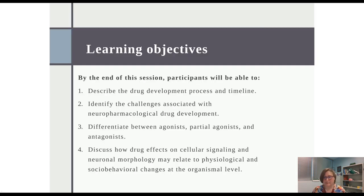At the end of this talk today, I hope that you will be able to describe the drug development process and timeline, identify challenges associated with neuropharmacological drug development, differentiate between agonists, partial agonists, and antagonists, and discuss how drug effects on cellular signaling and neuronal morphology may relate to physiological and social behavioral changes at the organismal level.